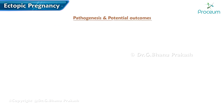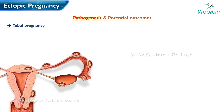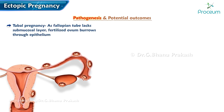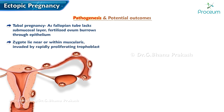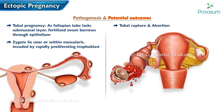Pathogenesis of tubal pregnancy: because the fallopian tube lacks a submucosal layer, the fertilized ovum promptly burrows through the epithelium. The zygote comes to lie near or within the muscularis, which is invaded by a rapidly proliferating trophoblast. Potential outcomes include tubal rupture, tubal abortion, or pregnancy failure with resolution.